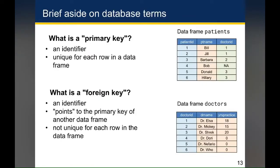The terms primary key and foreign key come from the world of relational databases. While we won't cover relational databases in much detail in this class, it's worth understanding these terms because they're really important when you decide to join two different data frames together. The primary key refers to a column that is an identifier that's unique for each row in that data frame. Whereas the foreign key also serves as an identifier but is typically a pointer to a primary key in another data frame, meaning the foreign key is typically not unique for each row.